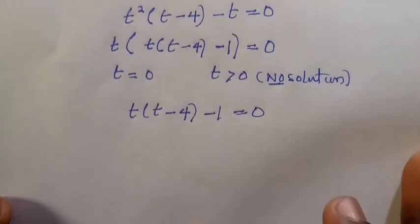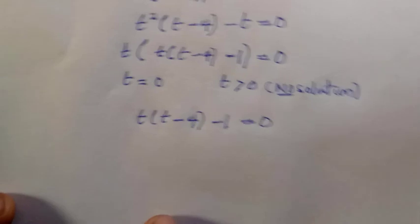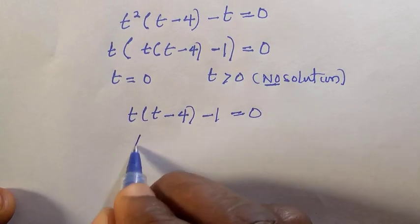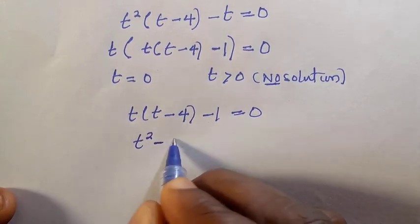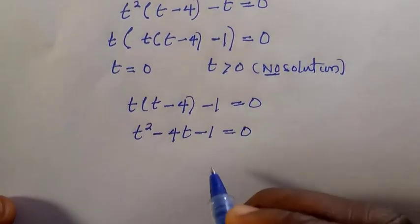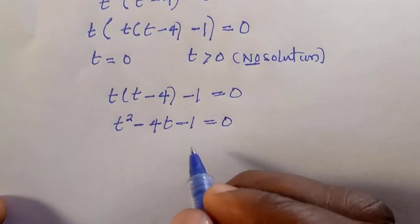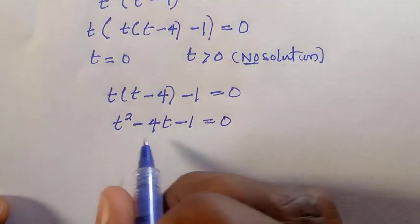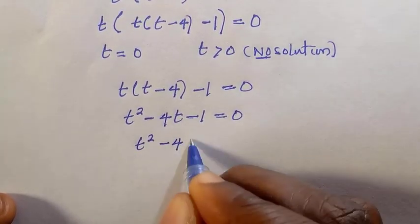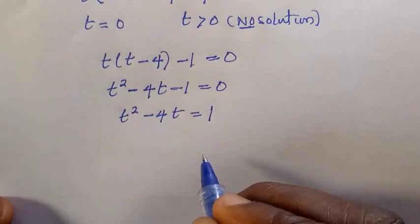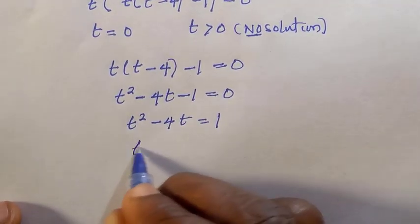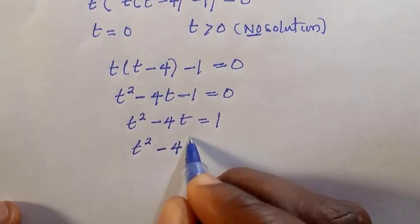The second factor is t bracket t minus four minus one equals zero. Expanding this gives a quadratic equation: t squared minus four t minus one equals zero. We cannot apply the factorization method here, and instead of using the quadratic formula, we will use the completing the square method. We transfer the negative one to the other side.